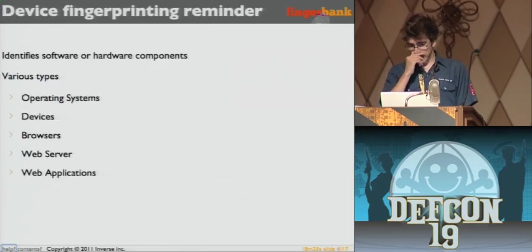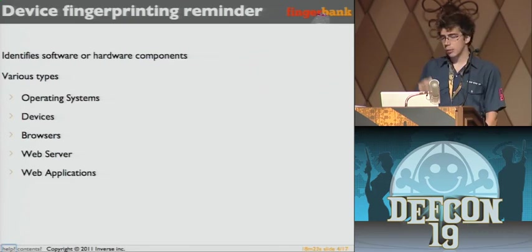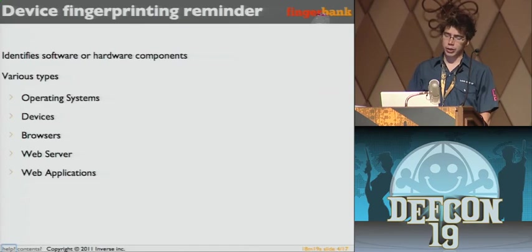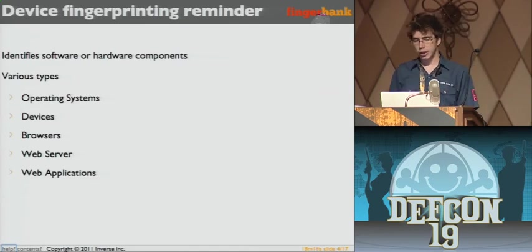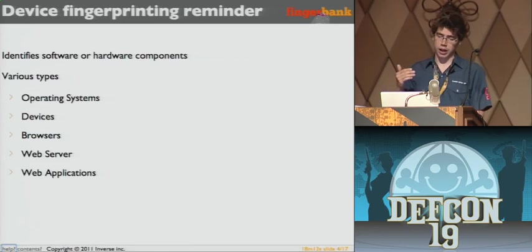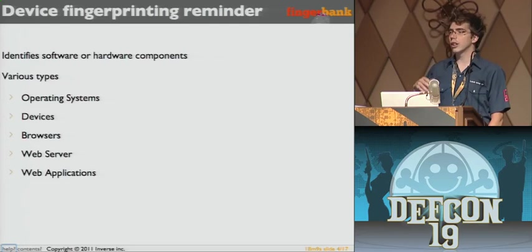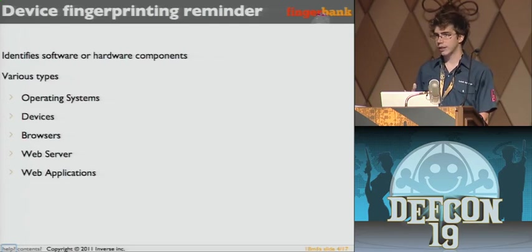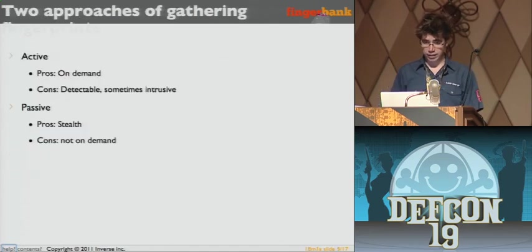Device fingerprinting identifies pieces of your software or hardware. You're probably familiar with p0f and stuff like that. There are various types: operating systems, devices, browser, web server, web application. It's another type of signature, more or less.